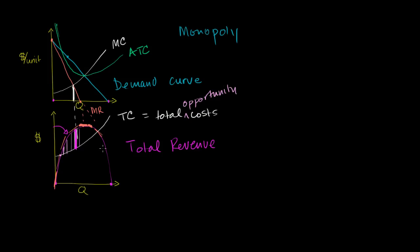With that, we can visualize economic profit on the graph. At our optimal quantity — where MR equals MC — we go to the demand curve to find the price we'll get in the market. Then our cost per unit is read from the average total cost curve. The vertical distance between the price and the average total cost is our economic profit per unit. Multiplying that profit per unit by the total number of units gives us the area of a rectangle — and that rectangle represents our total economic profit for this monopoly.